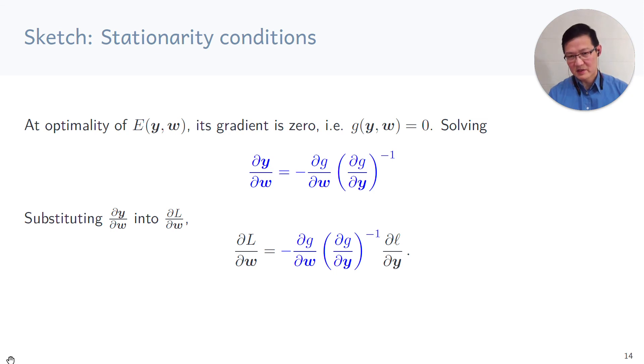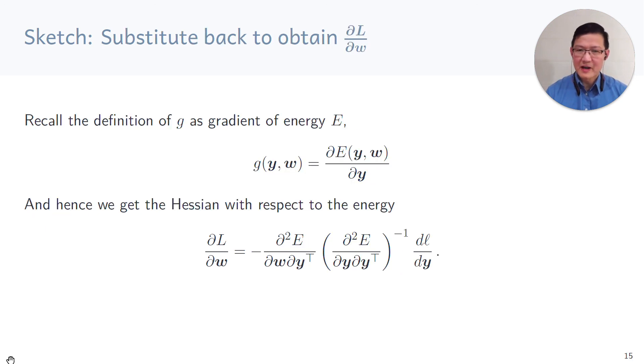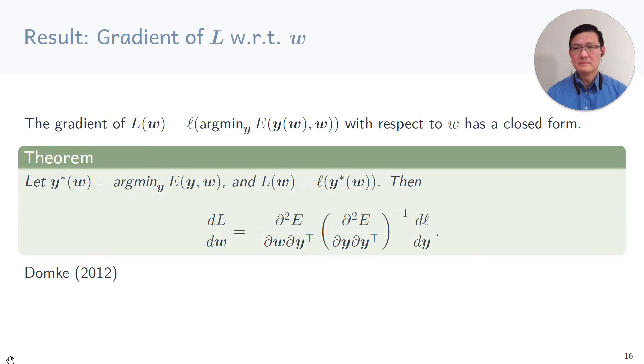So setting that and solving for the term will give us the equation we need. We solve, we set G equals 0, rearrange the terms and we end up with this expression for the partial derivative of Y with respect to w. And taking that blue term and substituting back into the original derivative, we get the gradient of the loss with respect to the parameters w. That was quite quick, but if you go back and look at it again, you can see that it's actually quite straightforward. That's one more step to remember because we defined G as the gradient of the energy. And so we just resubstitute that back in and we get that the gradient of the loss function L with respect to the parameters is in terms of the Hessians and the inverse Hessians. And hence we get the theorem that we see.